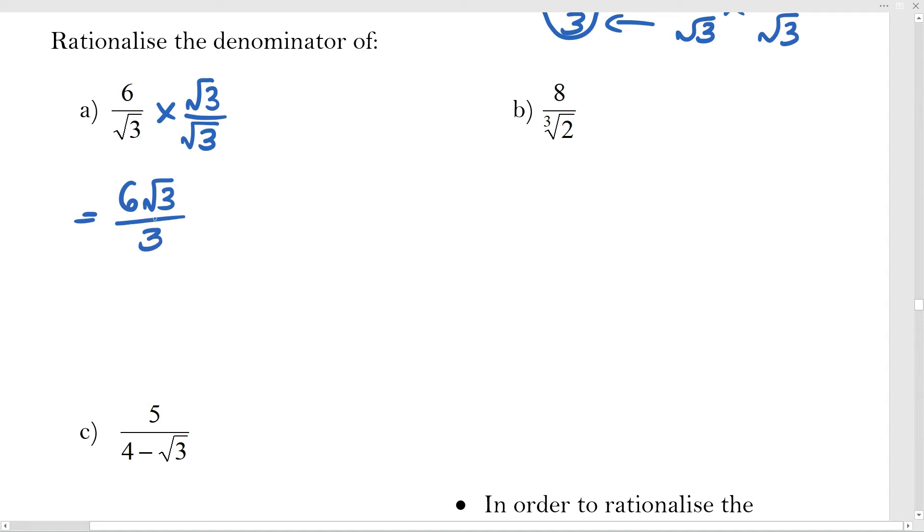So then I end up with 6 root 3 at the top over 3 at the bottom. And of course in maths we're always simplifying. So the 6 over 3 part of it can then simplify further to 2. So my answer here is 2 root 3, which looks so different to the original. But it is the same thing, just with a rationalized denominator, which then actually falls away.